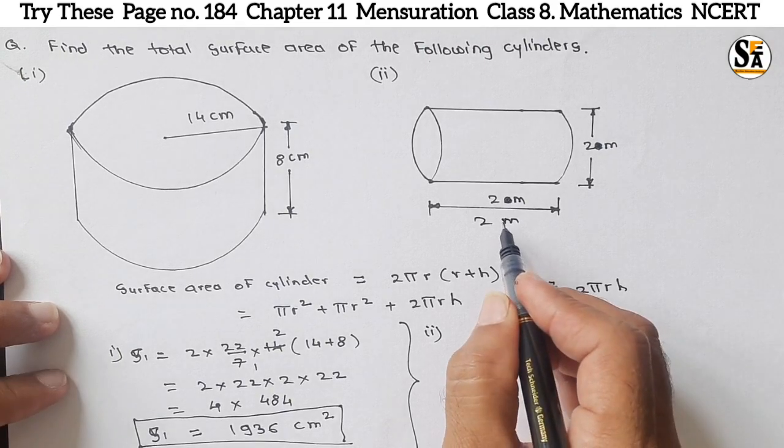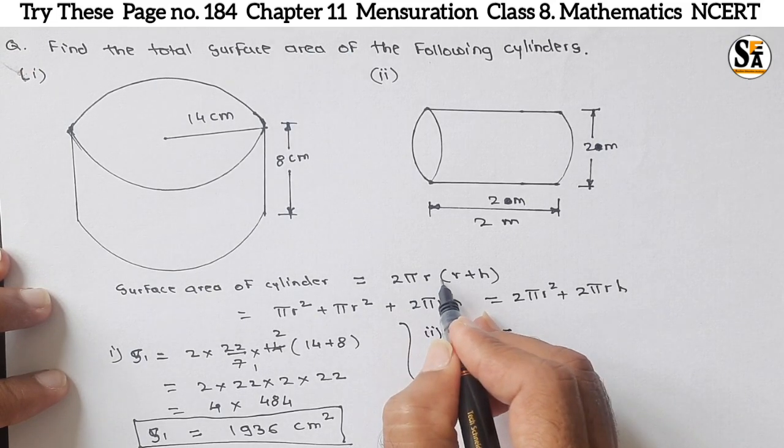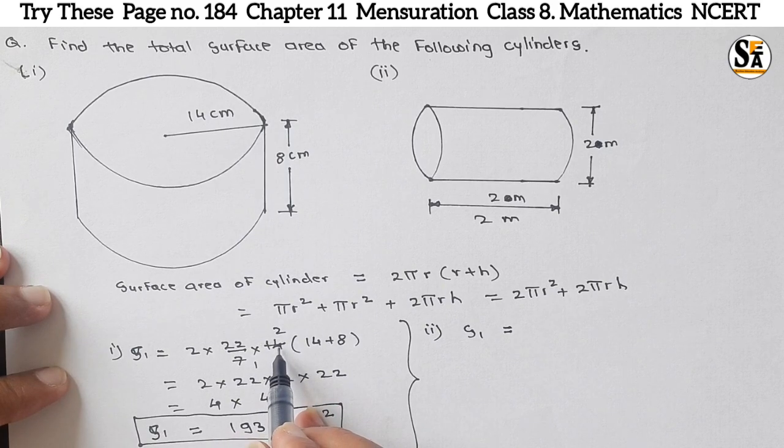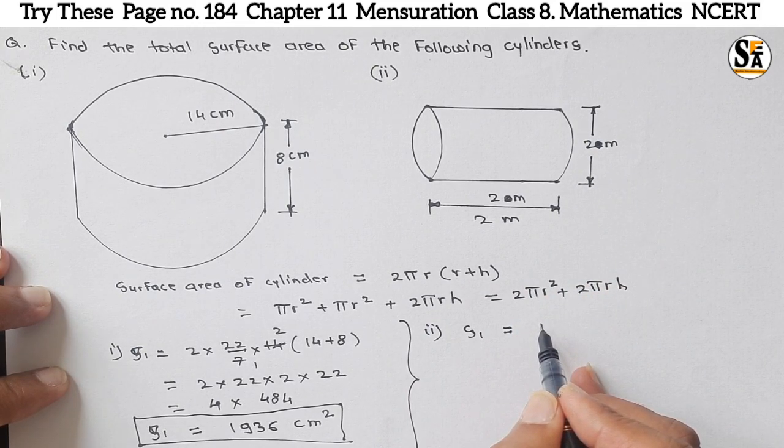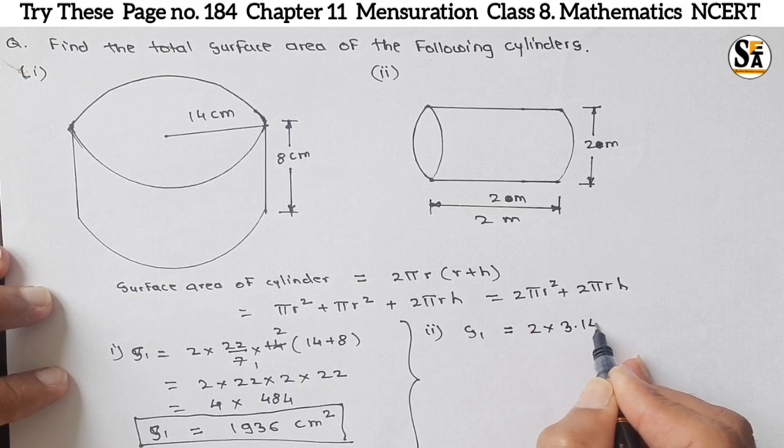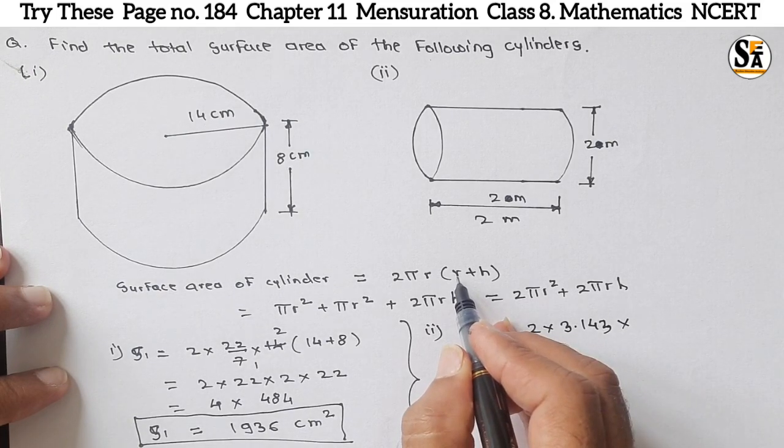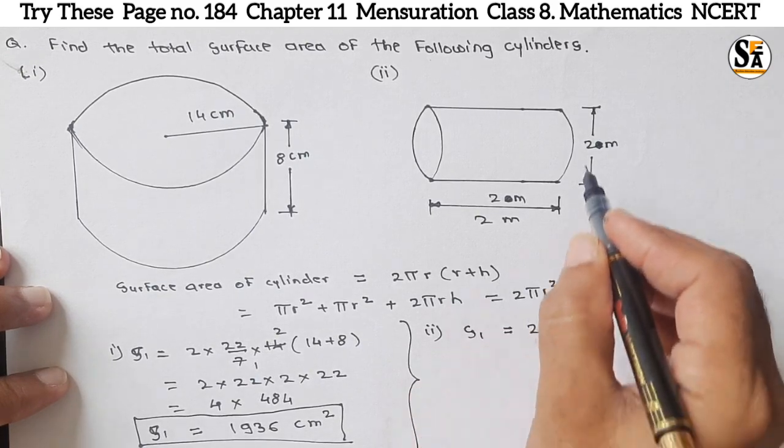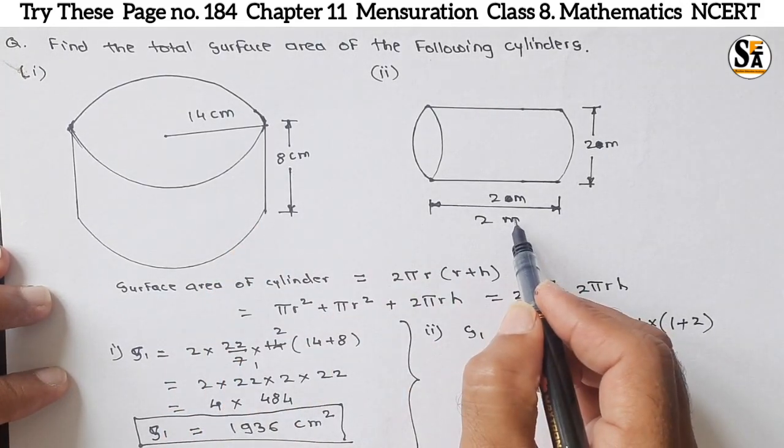Now put the values: S₂ equals 2πr. Now see here, why we are putting 22/7 as the value of π? Because we are finding 14 which is divided by 7. But there is no 14 or multiples of 7 here. So write the value of π as 3.143. So write 2 × 3.143 × r. Here diameter is given as 2 meter, so r will be 1 meter. And in brackets (r+h), r is 1 and h is 2 meter. In the first example unit is centimeter and in the second example unit is meter.